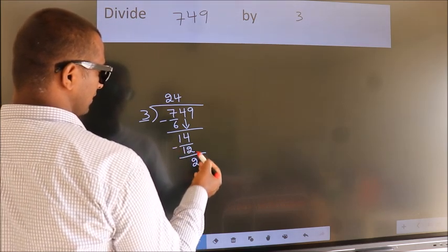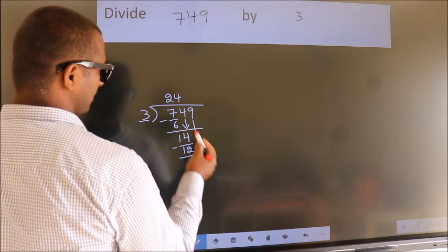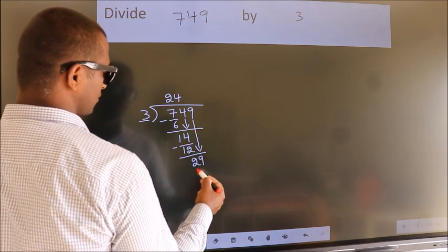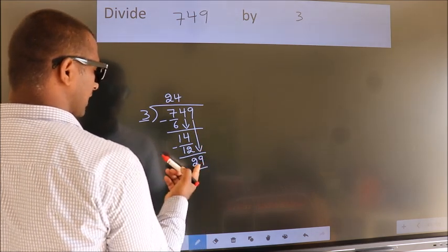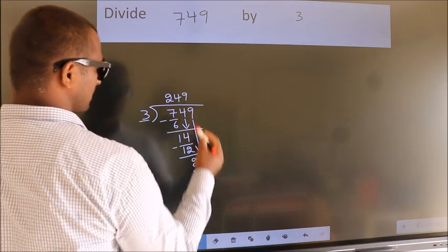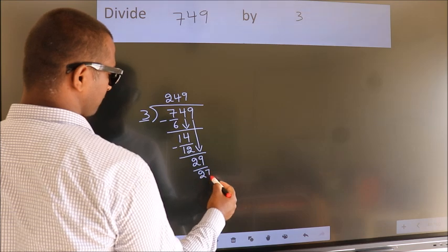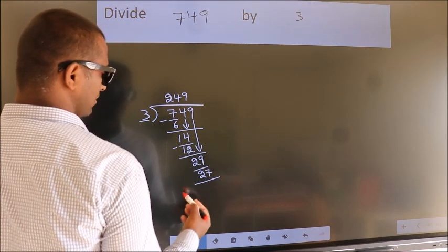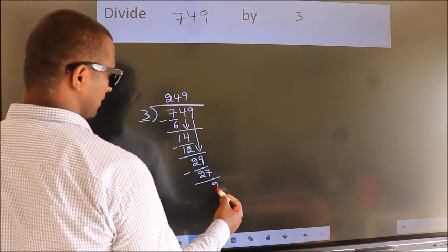After this, bring down the beside number. So 9 down, giving us 29. A number close to 29 in the 3 table is 3 times 9 equals 27. Now we subtract. We get 2.